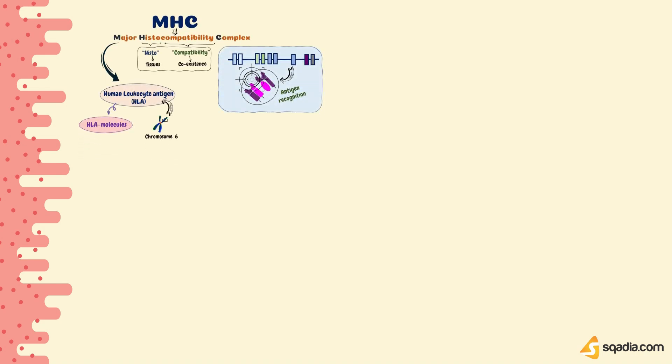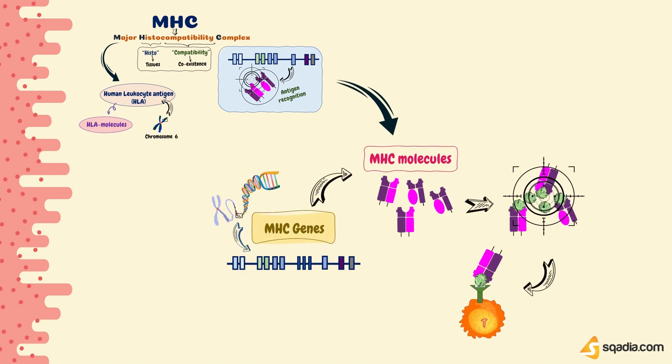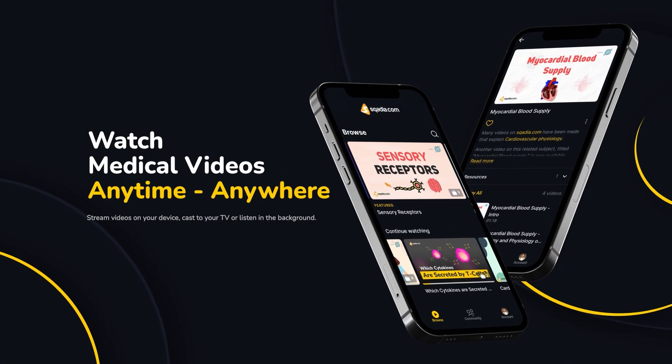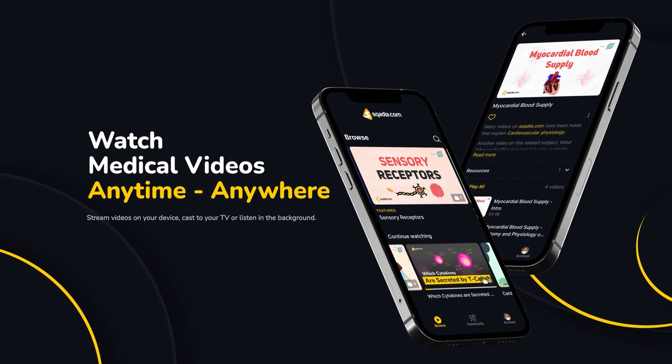So this was all about MHC restriction. From all this discussion, we have learned that MHC is the gene segment that encodes specific molecules. These MHC molecules then present antigen to the T cell receptors. And with extreme specificity, T cells bind this antigen-MHC complex, which further leads to antigen removal from the body. This was a wholesome video on MHC and antigen presentation.